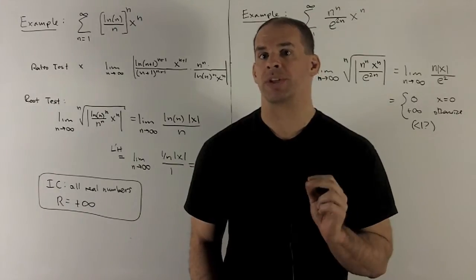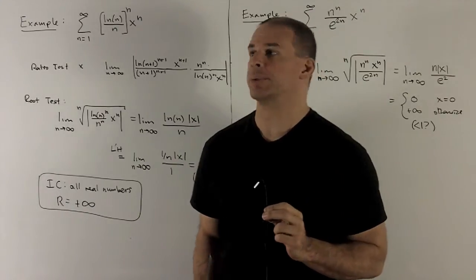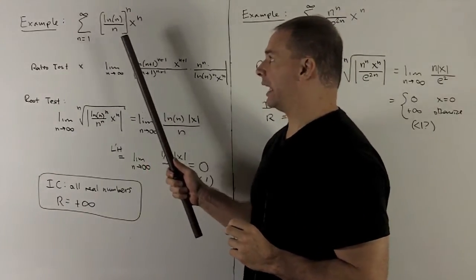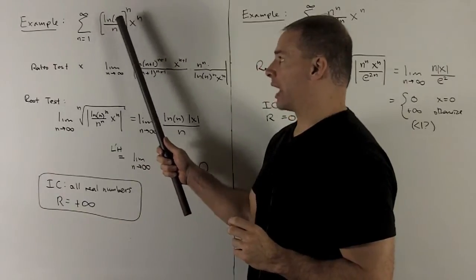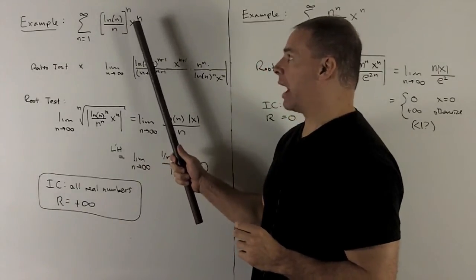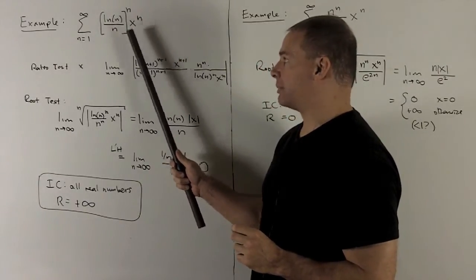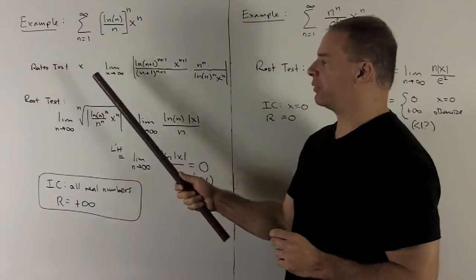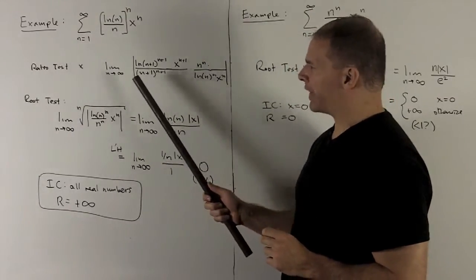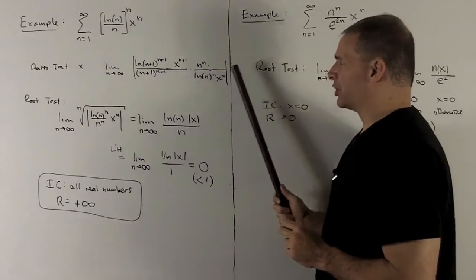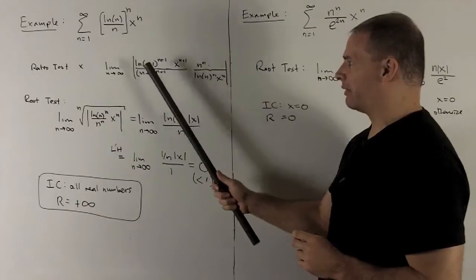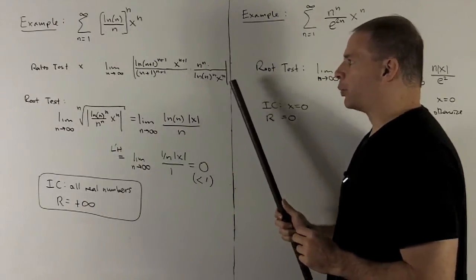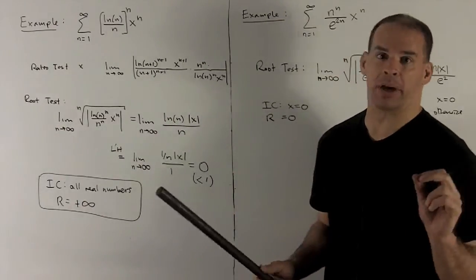Let's look at some examples where the root test applies. I'm going to try the sum from n=1 to infinity of natural log of n over n, raised to the nth power, times x to the n. If we try to push the ratio test through, we see that's going to turn into kind of a mess. Why would you want to when you've got a better technique?